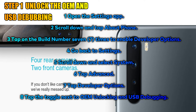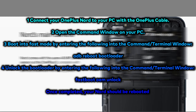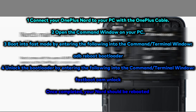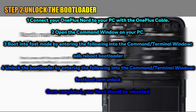You are now set and ready to unlock the bootloader. Step 2: connect your OnePlus Nord to your PC with a USB cable. Open the command window on your PC — this depends on your operating system, whether you are using Windows or Mac.